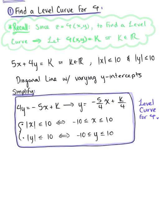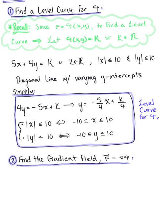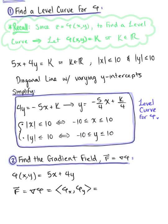Now we're ready to find the gradient field. Given the potential function phi of xy equals 5x plus 4y, the gradient field, vector F or del phi, is the vector whose components are the partial derivatives. So our gradient field is defined as the vector with components 5, 4.